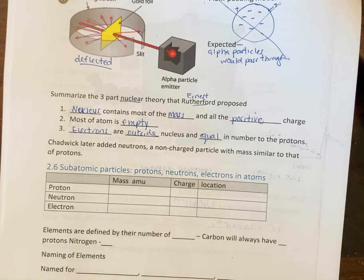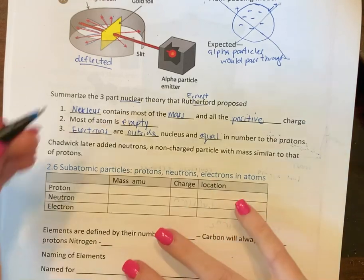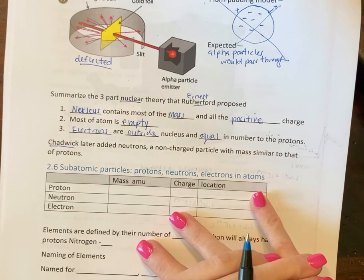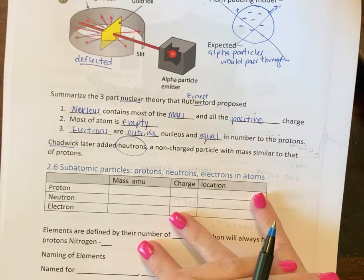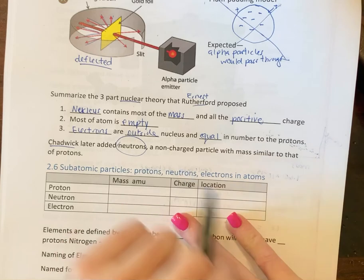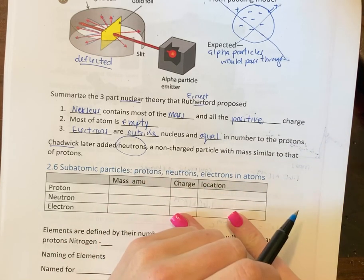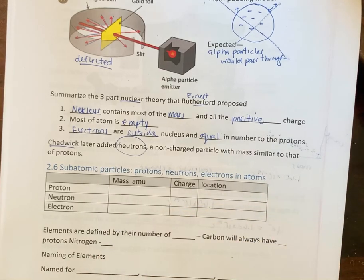Same number of protons, same number of neutrons. This other dude, his name is Chadwick, he came along later, also won a Nobel Prize, and he discovered neutrons. Neutrons are non-charged particles and they're similar to protons otherwise. They're also located in the nucleus.